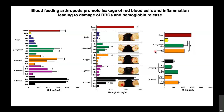To investigate the contribution of vector saliva to HO-1 induction, we isolated salivary glands, sonicated them, and injected salivary gland homogenate from Lutzomyia longipalpis sand flies and Aedes aegypti intradermally, comparing with the respective vector bites. We observed a dose-dependent effect on HO-1 induction promoted by vector saliva, although levels were not quite as high as the bite itself, showing that saliva contributes to HO-1 induction in whole skin but is not the only mechanism involved.